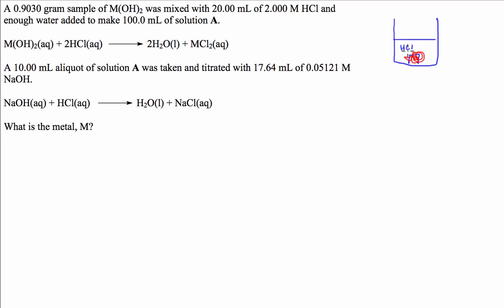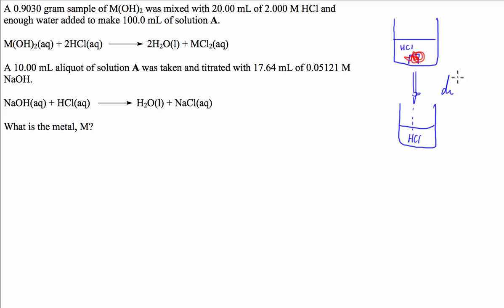but what happens in the end is we have some hydrochloric acid left over because it was in excess. What a back titration does is we then get the resulting solution, which has less hydrochloric acid in it because the hydrochloric acid has been consumed in the reaction, and we titrate against that. So basically we measure the amount of hydrochloric acid at the end of the reaction, and we know how much hydrochloric acid we started with, and because of the difference we can tell something about the initial sample. That's my simple English explanation of what a back titration is.